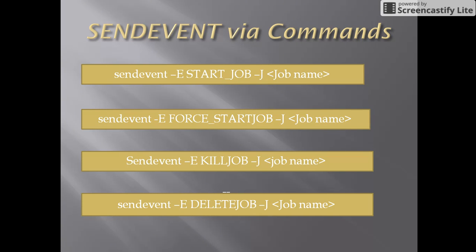The second command is: send_event -e force_start_job -j job_name. This command will ignore both the date and time condition along with the dependent job on which it has to be triggered. So you will get the difference between start_job and force_start_job.